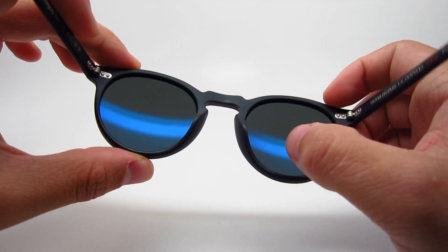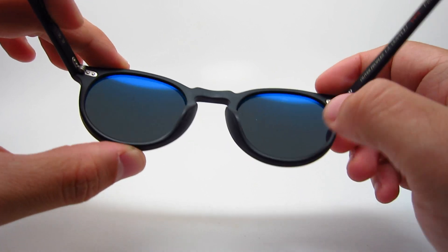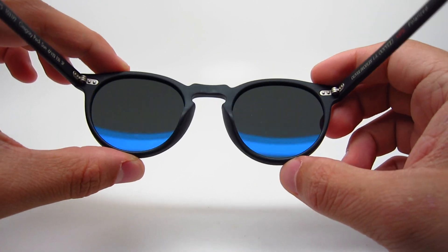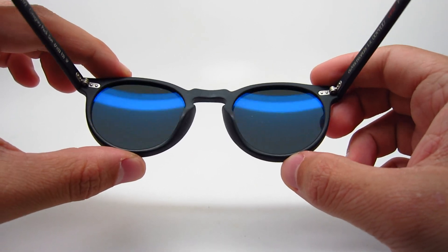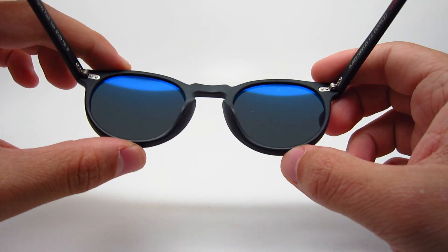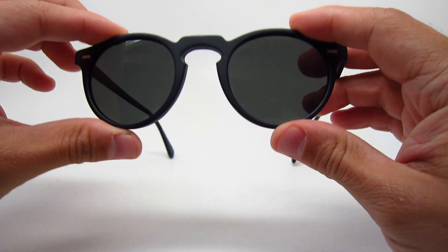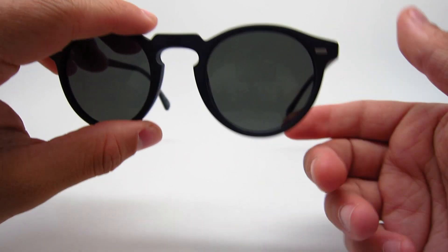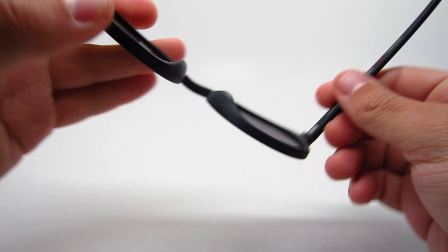On the back here, it has an AR coating, anti-reflective coating. Usually when you see this blue when it hits the light, that means it's the AR coating. It doesn't do it on the front. You can put AR coating on the front, but most of the time they put it on the back.